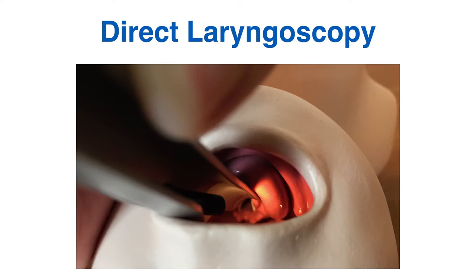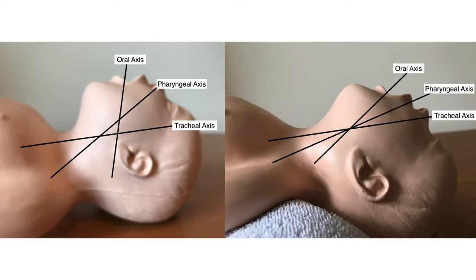With direct laryngoscopy you use a traditional laryngoscope to move the patient's tongue to the side and lift their epiglottis to give yourself a view of the laryngeal opening, normally to facilitate intubation. To give yourself the best chance of succeeding, it is really important that you have the patient appropriately positioned prior to starting - ear to sternal notch - so that the oral, pharyngeal, and tracheal axes are brought into alignment. If these axes are out of alignment, you're going to have difficulty.